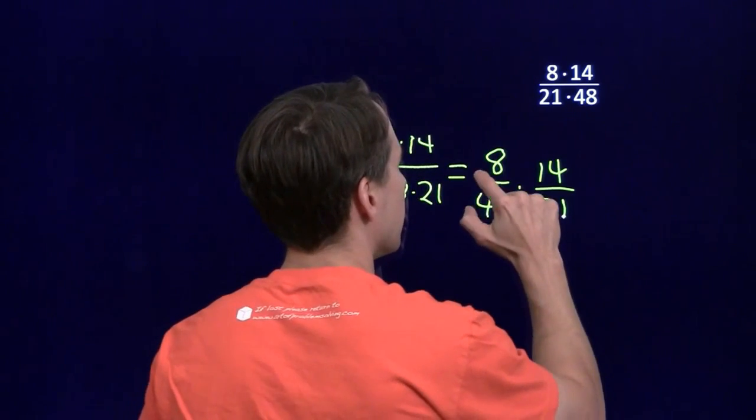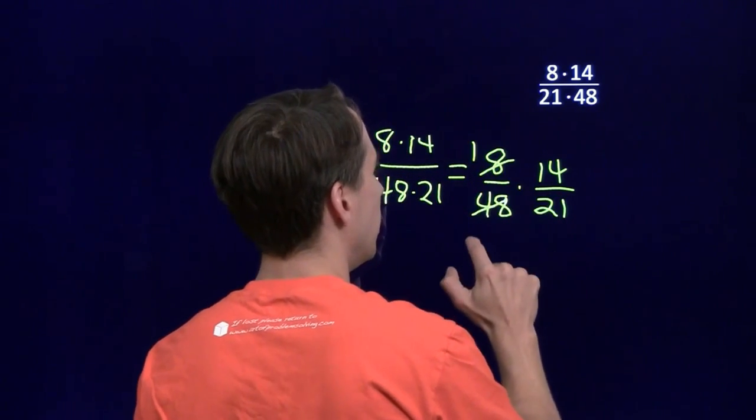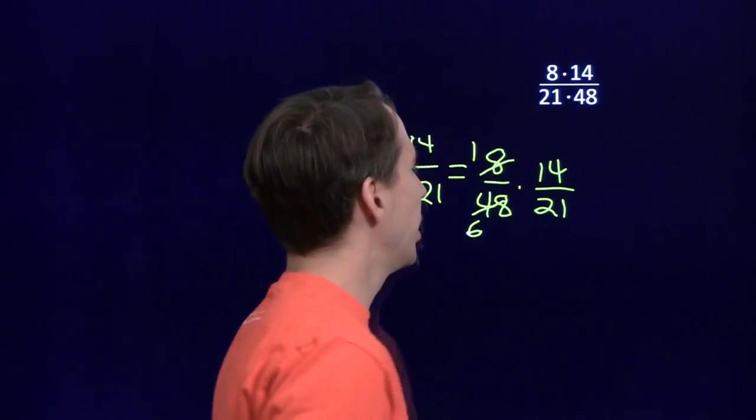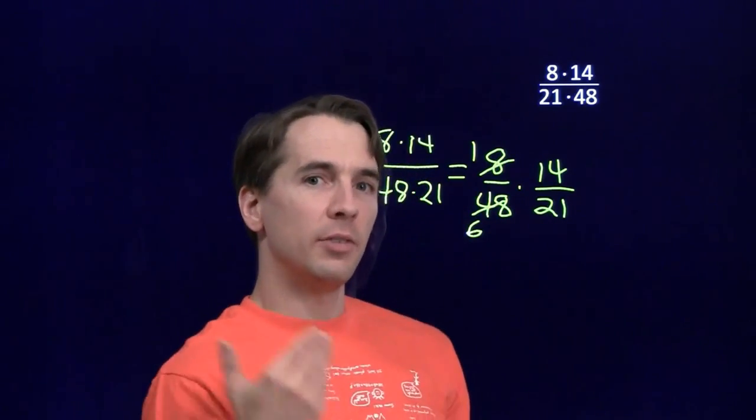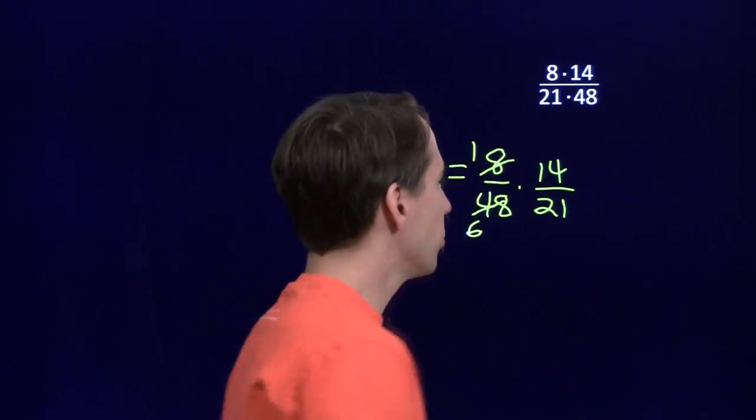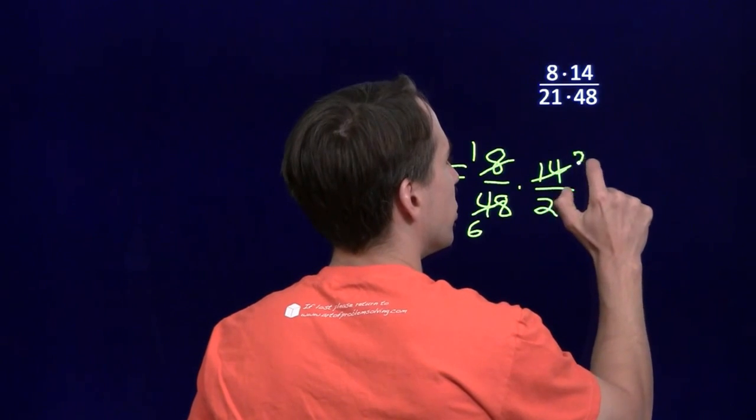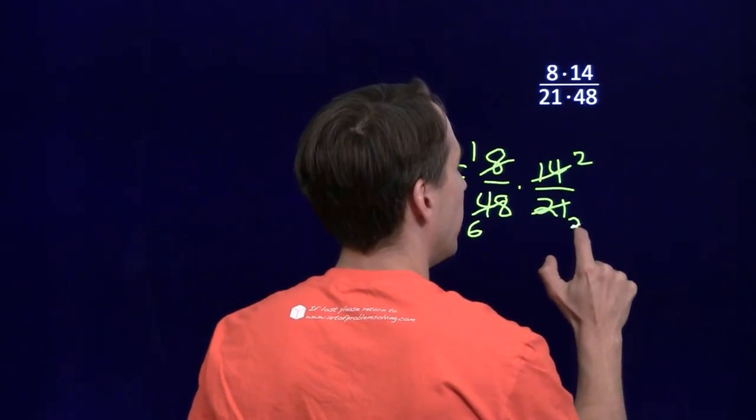We'll have a 1 in the numerator and a 6 in the denominator. 14 over 21. Those are both multiples of 7. 2 times 7 over 3 times 7. Cancel those 7s. And we're left with 2 in the numerator, 3 in the denominator.